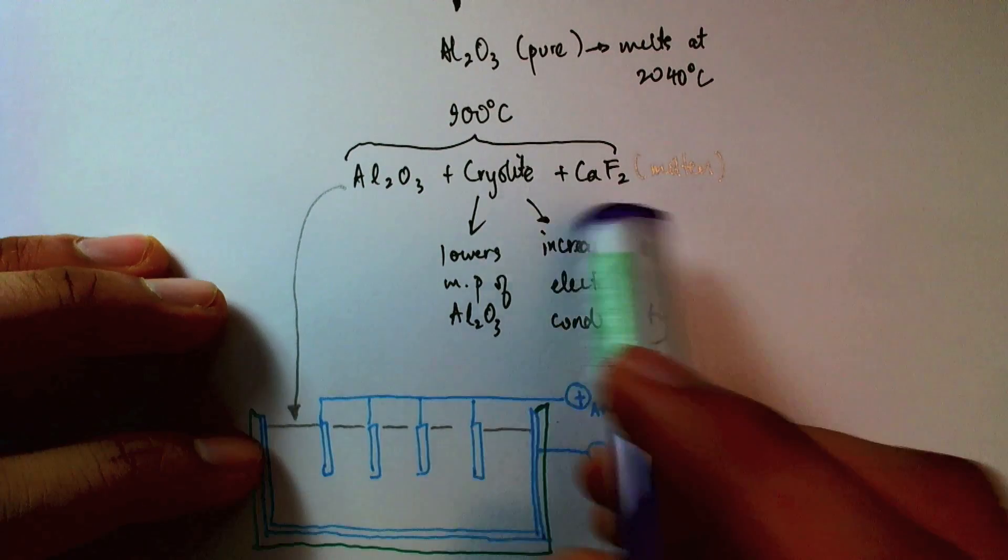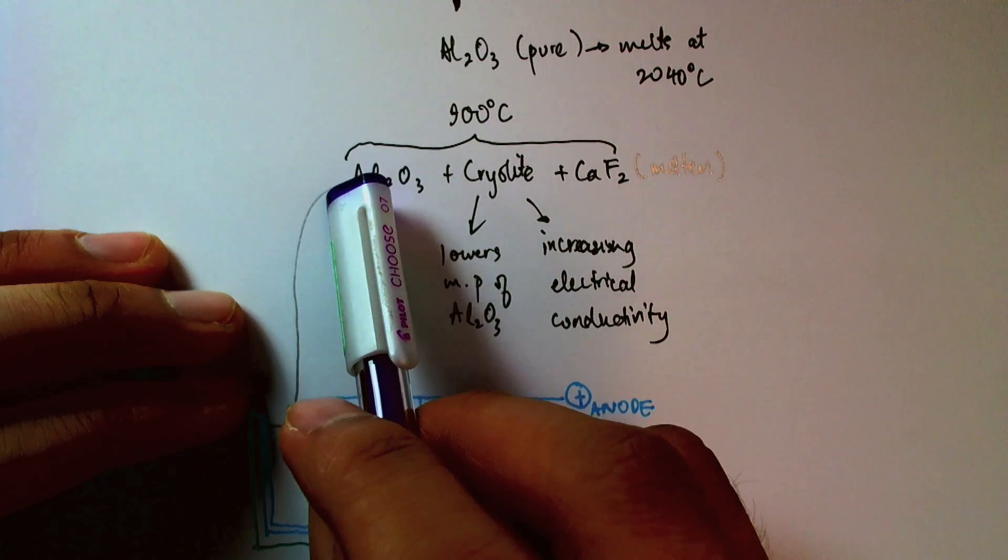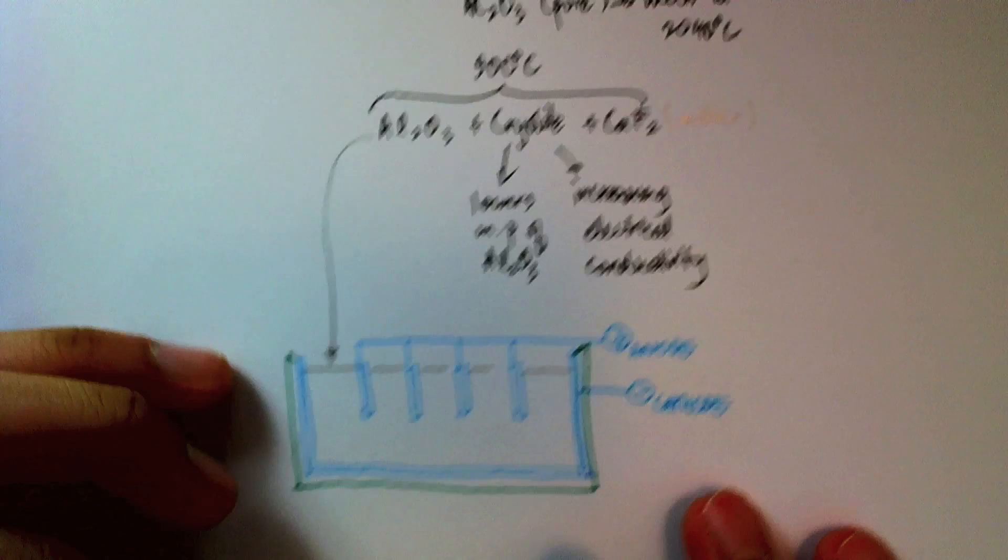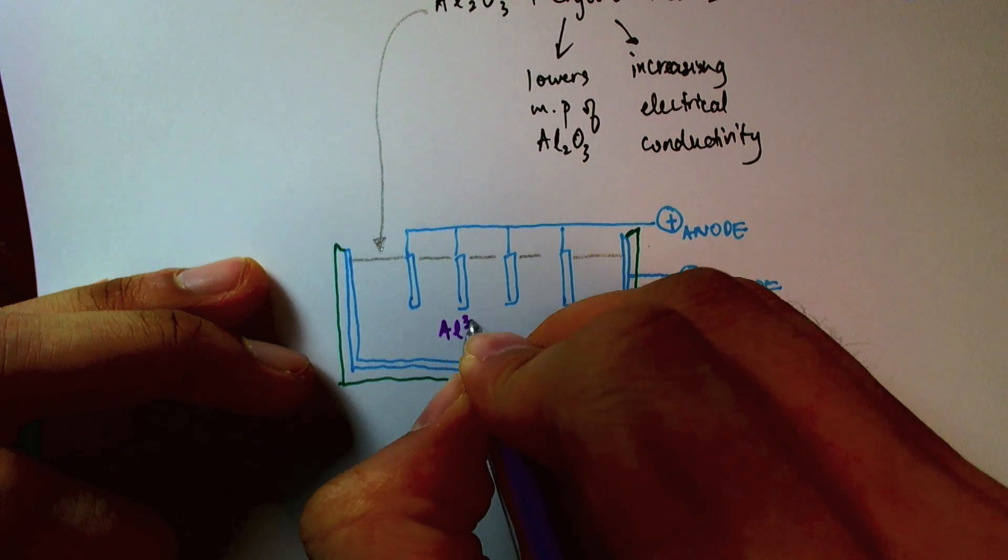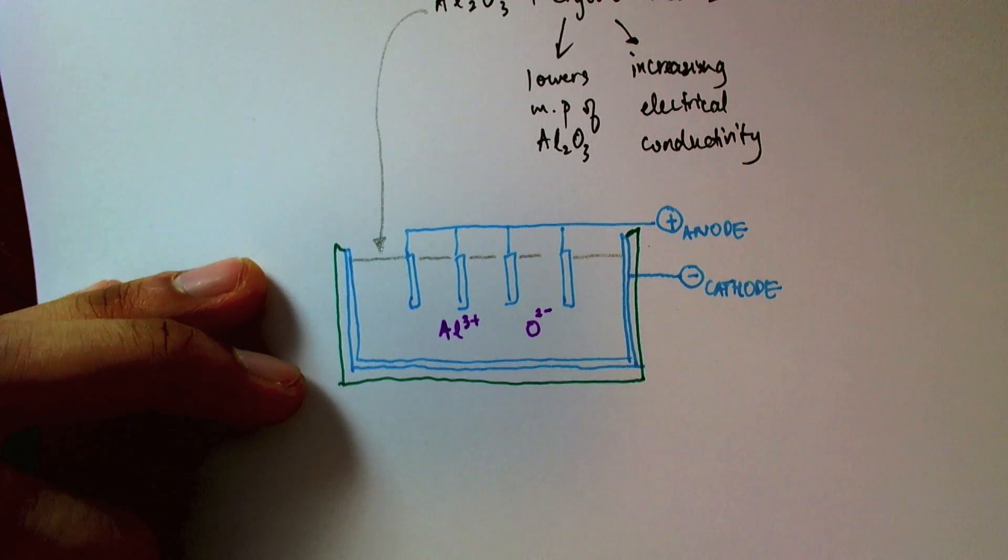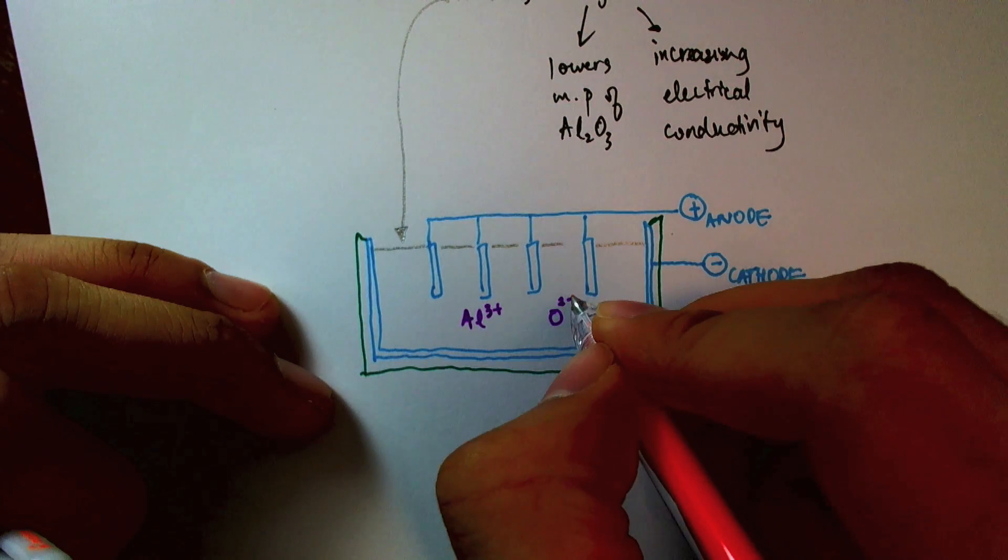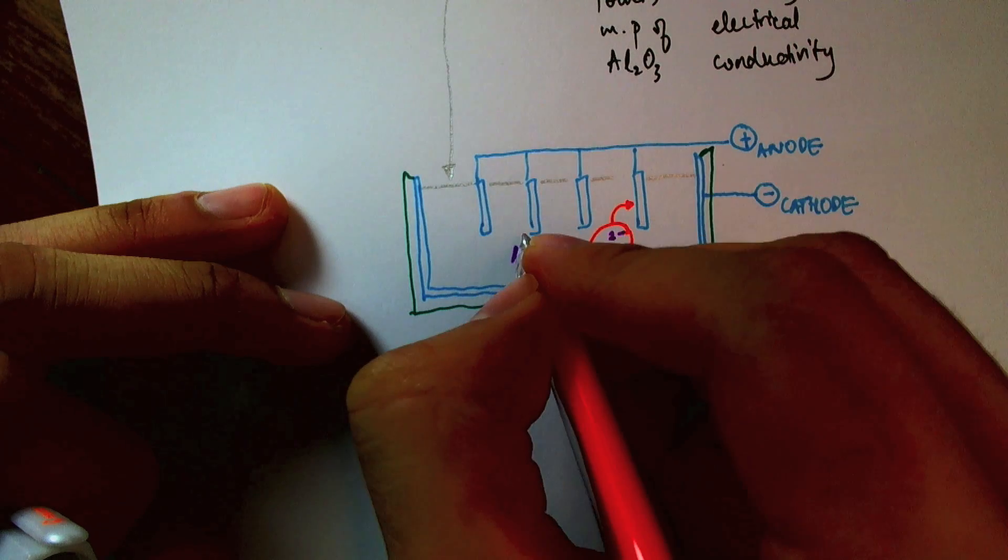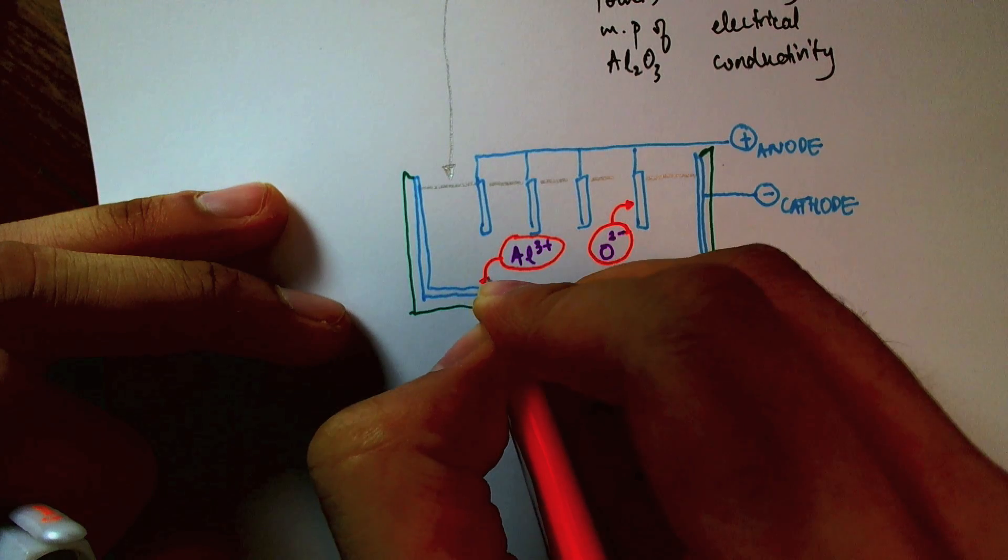Now, it turns out that the substances in cryolite and calcium fluoride are all more reactive than aluminum oxide, so they don't interfere with our process of electrolysis. So I will just draw the ions that take place in electrolysis here, the aluminum ions and the oxide ions. The oxide ions, being negative, will be attracted to the anode, while the aluminum ions, being positive, will be attracted to the cathode.